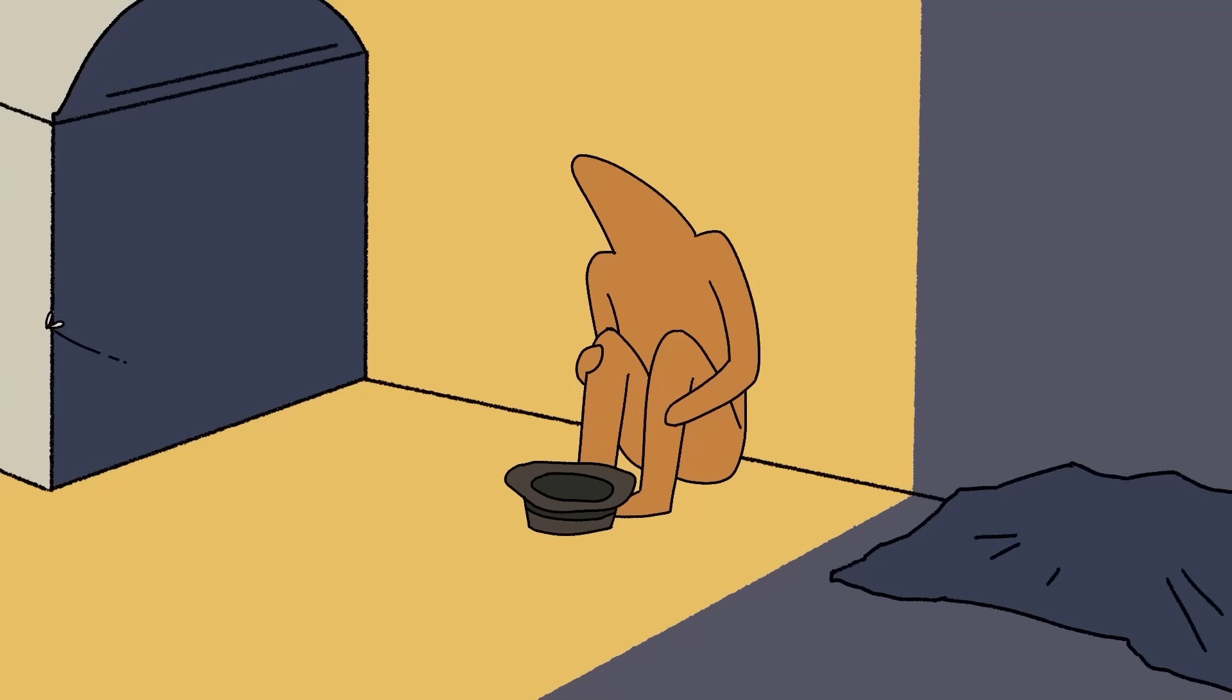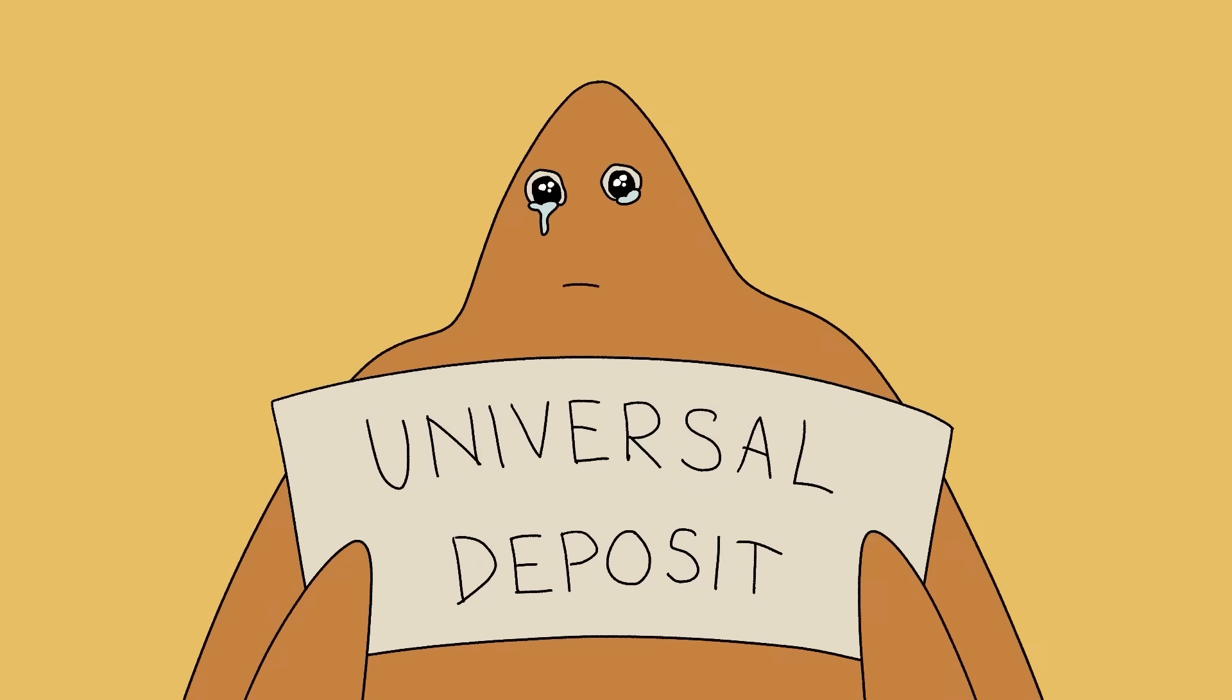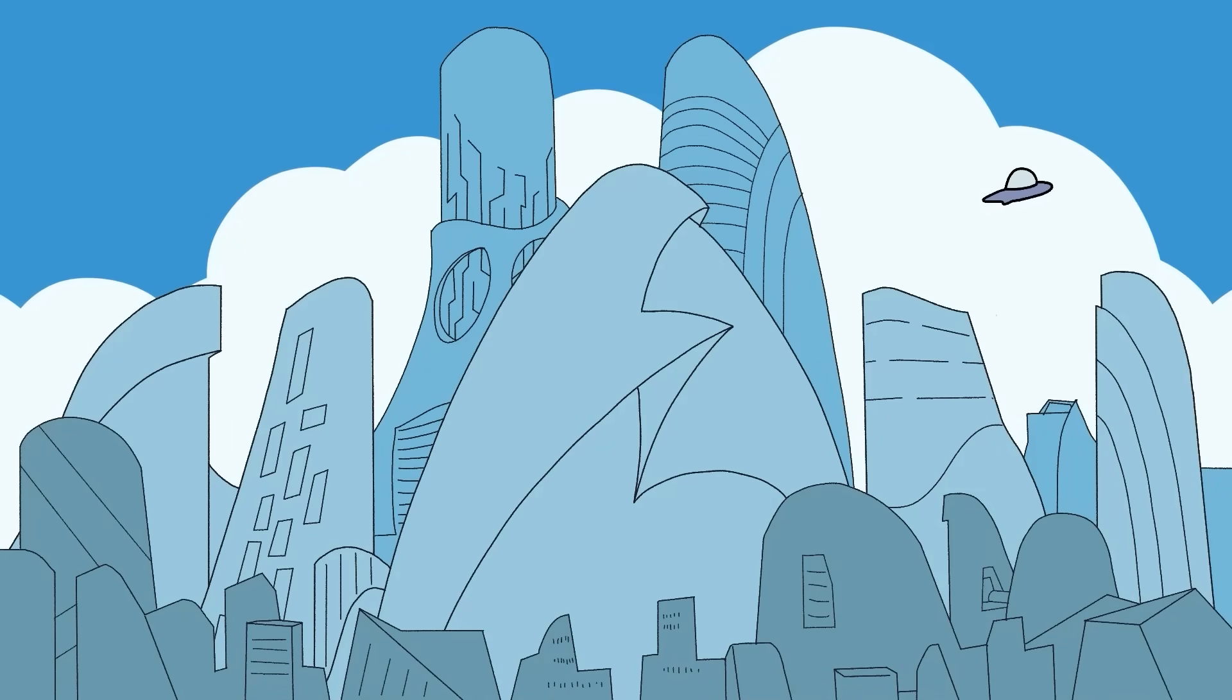First, there was despair, swiftly followed by a brief sigh of relief as governments worldwide introduced universal basic income. Everyone now had a safety net. For a good few years, Earth was a utopia.